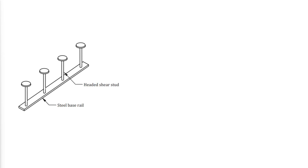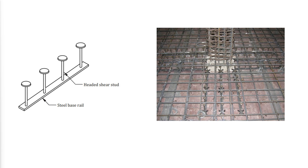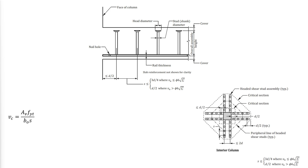Headed shear studs are typically welded to flat rails. The assembly is then positioned on chairs around the columns and subsequently nailed to the formwork. The size and spacing of the studs and the length of the rail depend on the shear requirements. Like bars, sufficient cover and spacing requirements must be provided for shear studs. The strength of the studs in shear can be found using the same equation as for stirrups. Following the definition of AV, a peripheral line geometrically similar to the column is drawn, and the number of studs intersecting the line — in this case 8 — is counted. That number is then multiplied by the cross-sectional area of a single stud to get AV. An additional equation must also be satisfied when using shear studs.